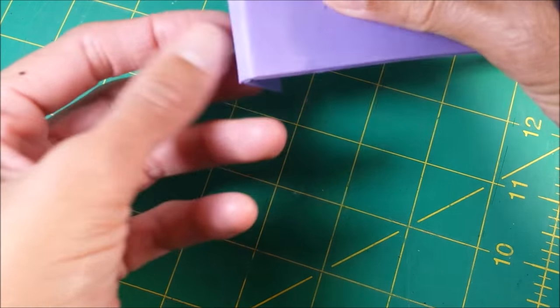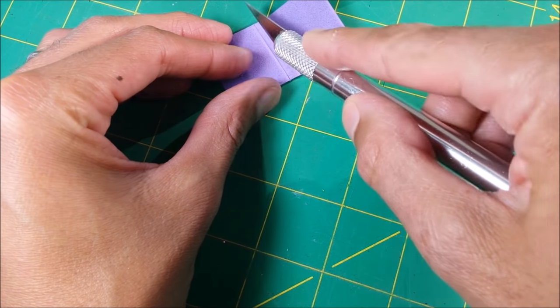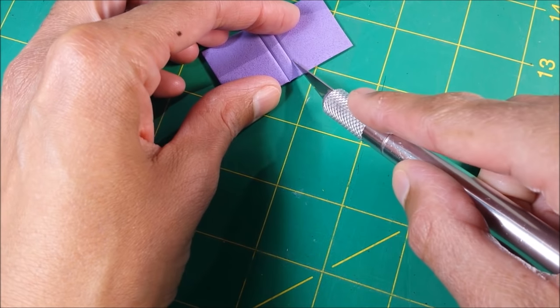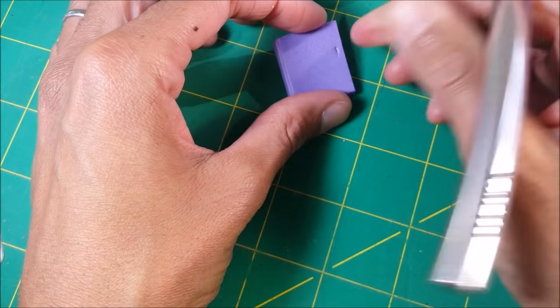In fact, in a second I end up using my exacto knife. I'm just cutting off that excess, and then I use my exacto knife when I score it to get a little bit more flexibility when I fold it.